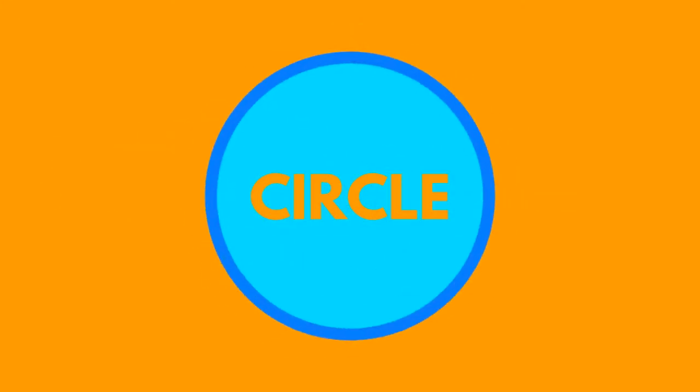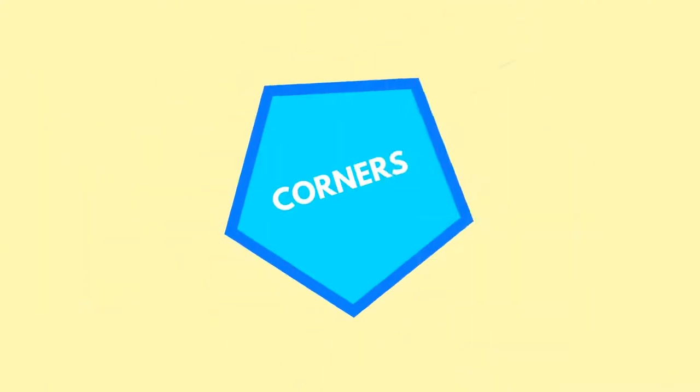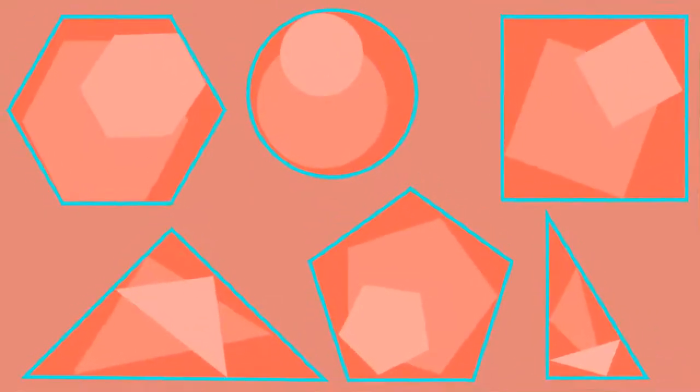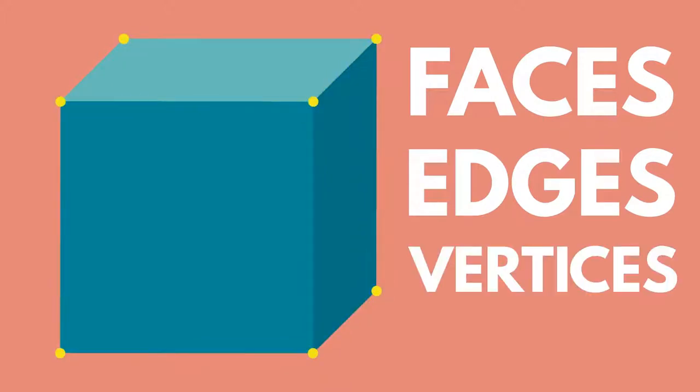With the exception of the circle, all 2D shapes such as triangles and hexagons have corners. Both 2D and 3D shapes have faces, edges, and vertices, or corners.